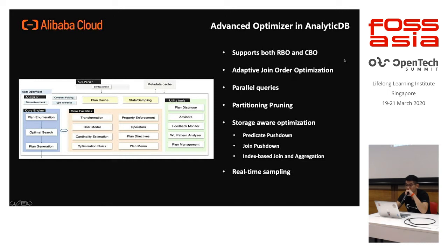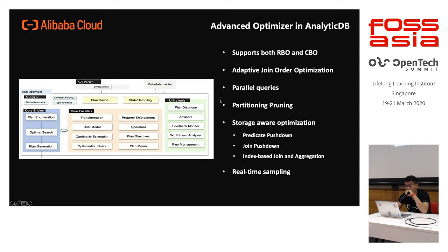Adaptive join order optimization: at runtime we collect all the rows, and based on the predicate and rows returned at runtime, we decide whether to join A to B or B to A. This is quite standard optimization. We also have parallel queries — MySQL 8 has it too. Partition pruning: if you query with a WHERE clause and the date is in two partitions, we just read those two partitions and ignore the rest. This is very standard optimization as well.